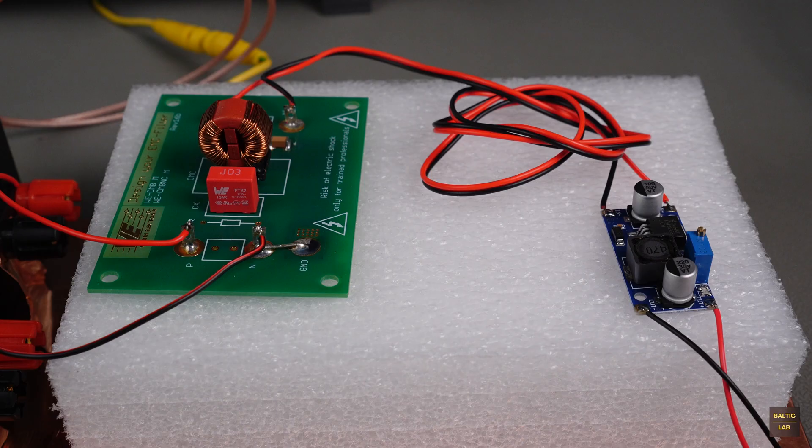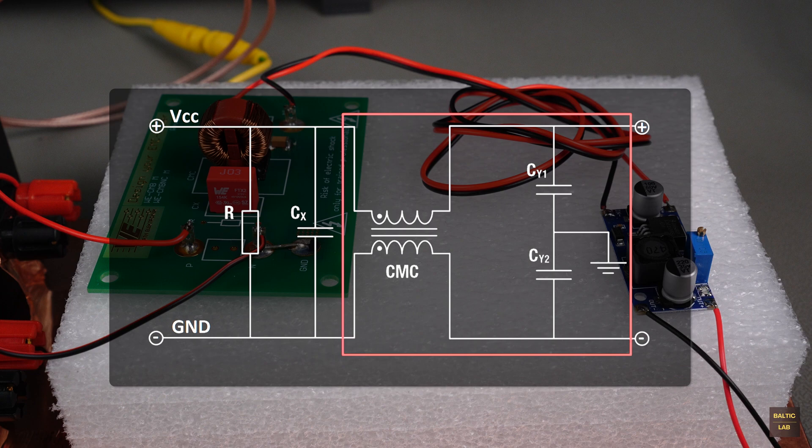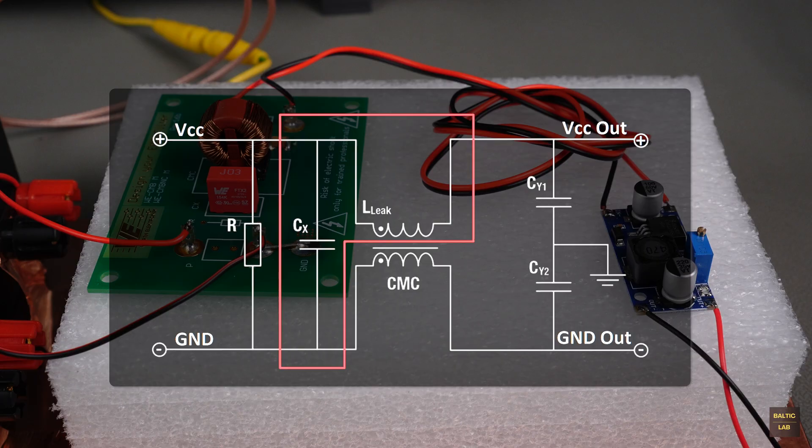Sample circuit one from the EMC filter kit is a classical filter structure often used to solve EMC issues. It's designed to suppress both common and differential mode interference. For common mode noise, the Y capacitors provide a direct path to ground. The high impedance of the common mode choke further attenuates these disturbances. From the perspective of differential mode noise, this circuit functions as a simple LC filter. Ideally, a common mode choke wouldn't have any impedance for differential mode signals, but in practice, a certain amount of leakage inductance is unavoidable.